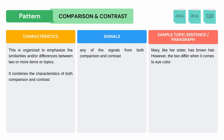Comparison and contrast is organized to emphasize the similarities and/or differences between two or more items or topics. It combines the characteristics of both comparison and contrast. Here is an example: Mary, like her sister, has brown hair; however, the two differ when it comes to eye color. Notice any signal words?